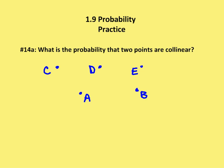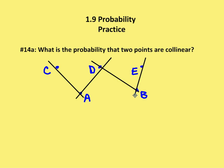Let's take on some practice. Number 14a: what is the probability? I have five points that are all laid out, and we can assume that C, D, and E are on the same line. What is the probability that two points are collinear? This is somewhat of a trick question, because any two points are always going to be on a given line — between C and A there is a line, between A and D there is a line, between D and E there's a line, between B and E there's a line. So any two points will determine a line, and the probability that two points are collinear is going to be 1.